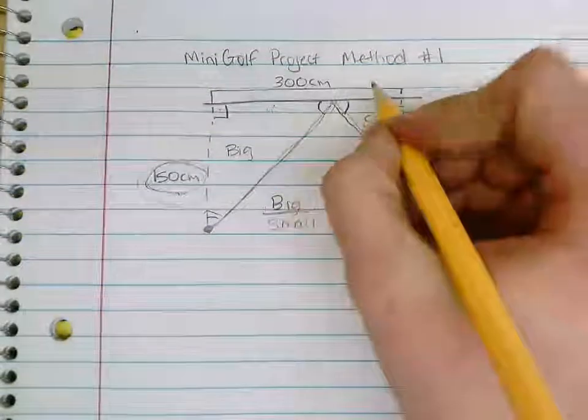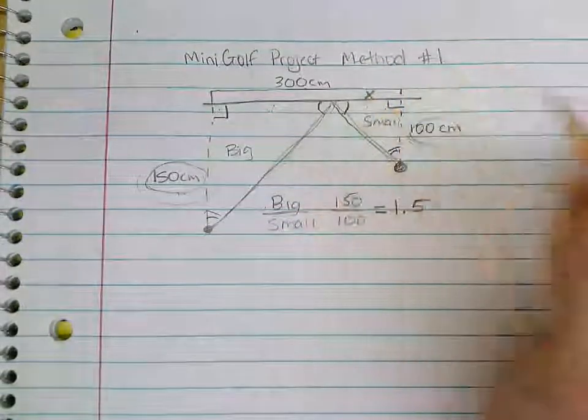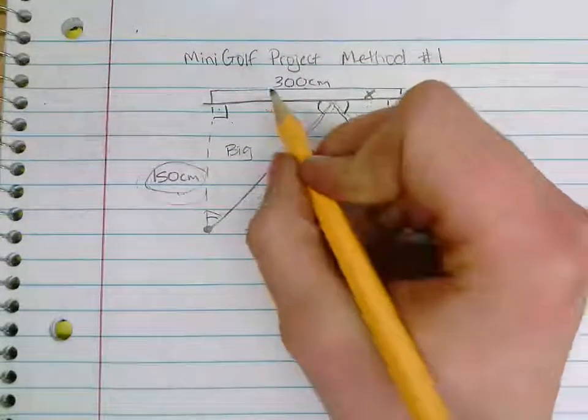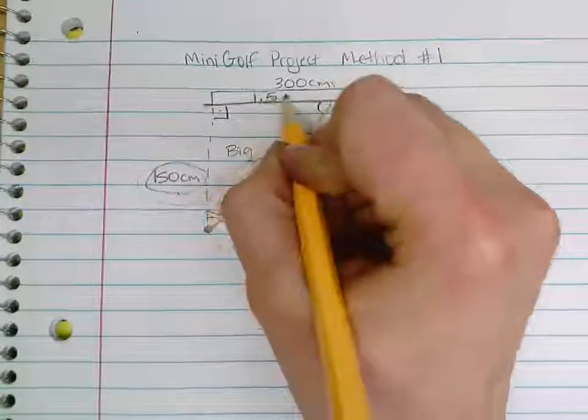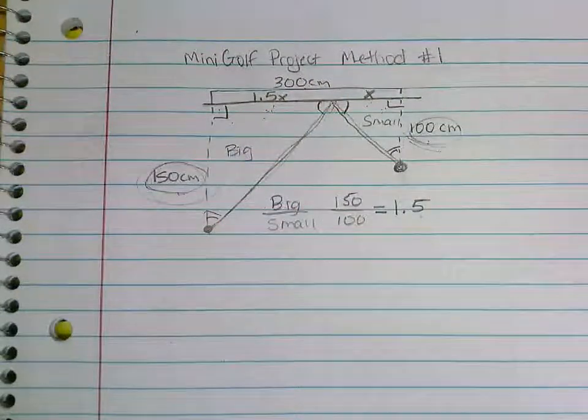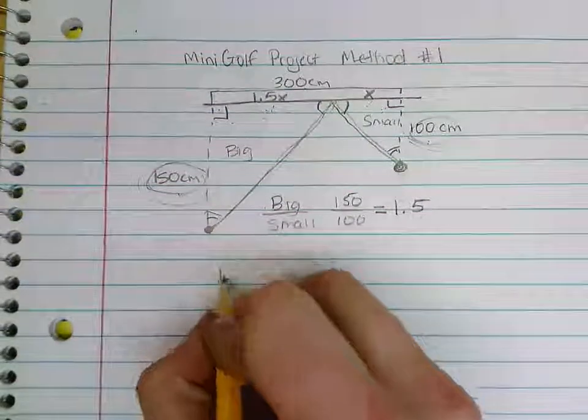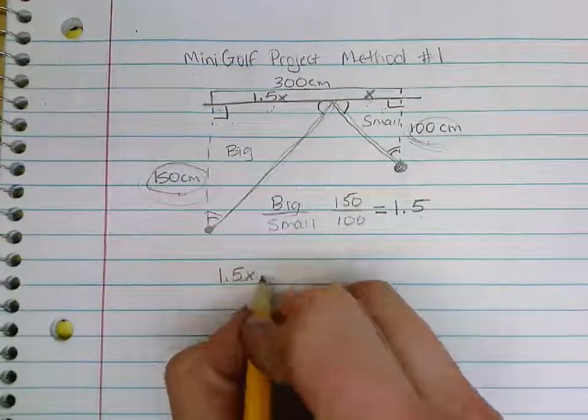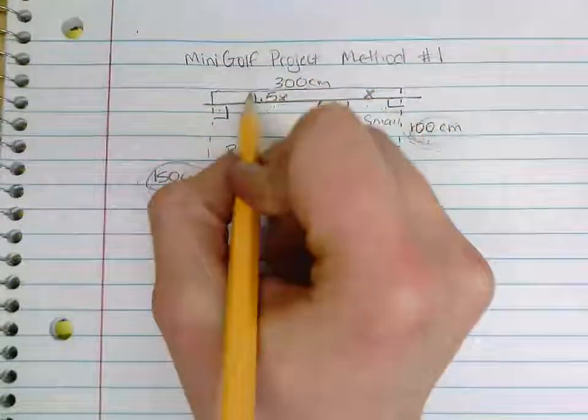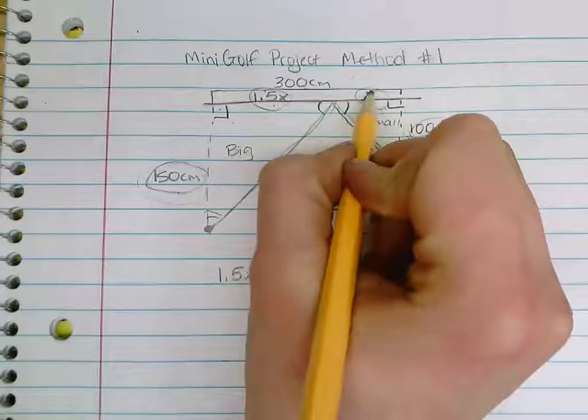So I'm going to label the small triangle right now as X, because I know that the large triangle or the big triangle needs to be 1.5 times the length of X or the small triangle. So I can write an equation that looks like 1.5X plus X, so this measurement plus this measurement needs to equal a total of 300.